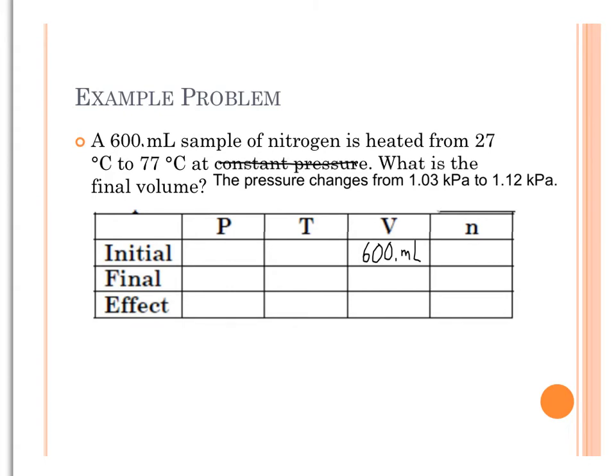Nitrogen is heated from 27 degrees Celsius to 77 degrees Celsius. Well, I need to change the degrees Celsius to the Kelvin temperature in order to have a proportional relationship. So I am going to make that adjustment. 27 plus 273 is 300 Kelvin.